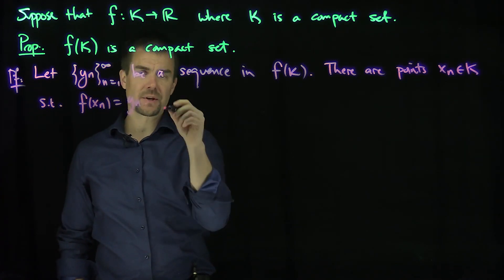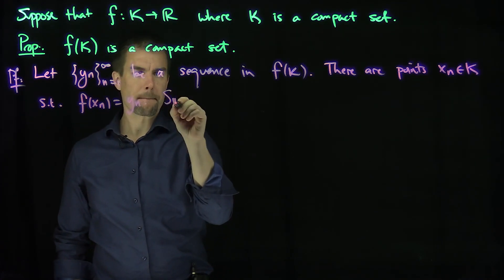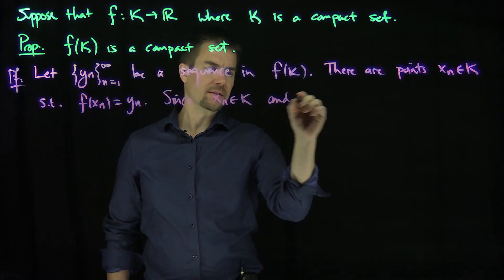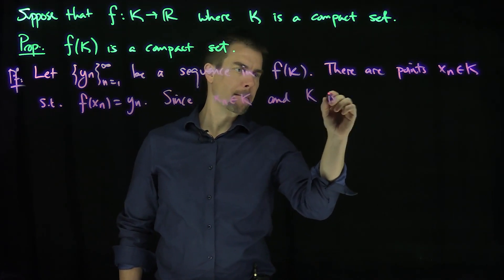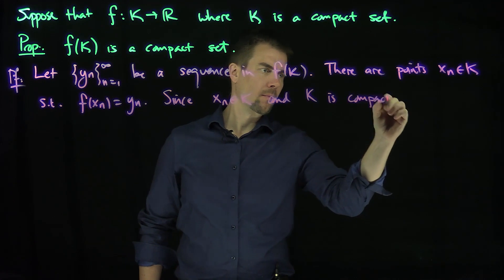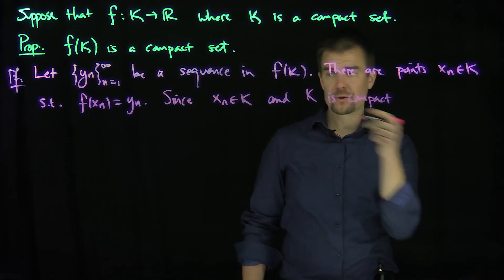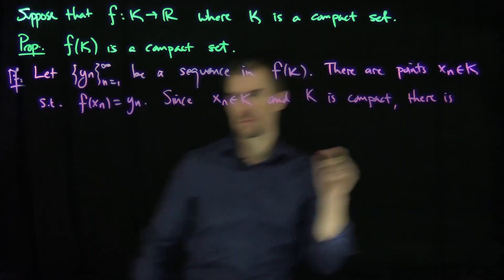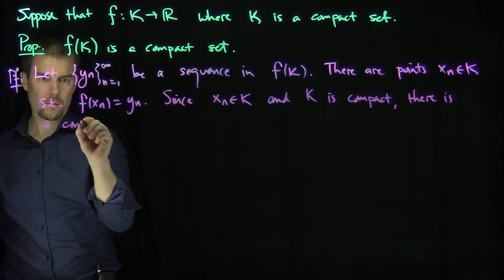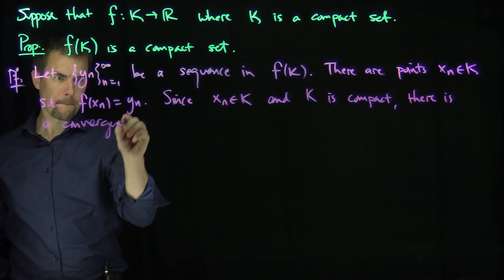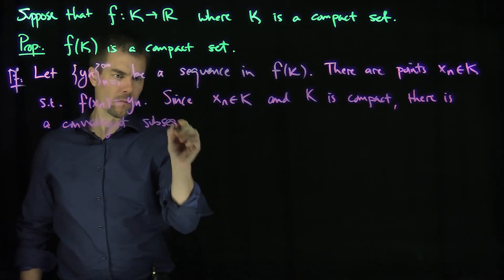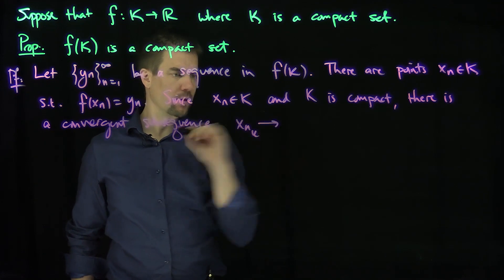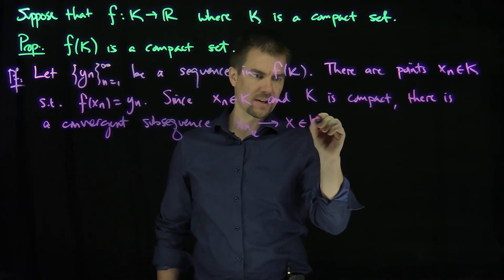Since x_n is a sequence in K, and K is compact, there is a convergent subsequence of this sequence. There is a convergent subsequence x_n_k in K which converges to a point x that's in K.